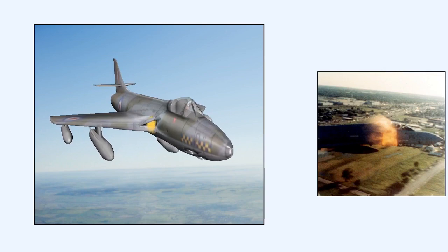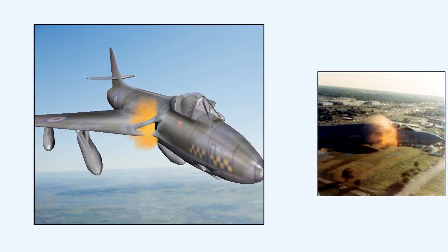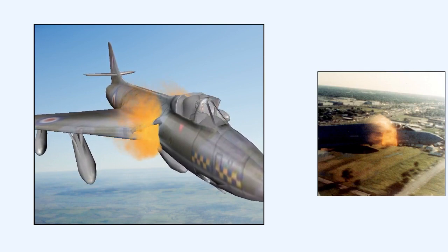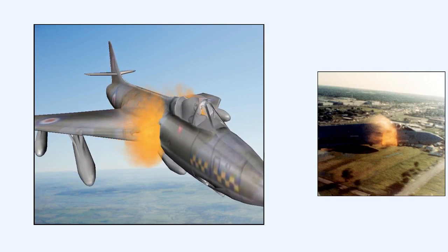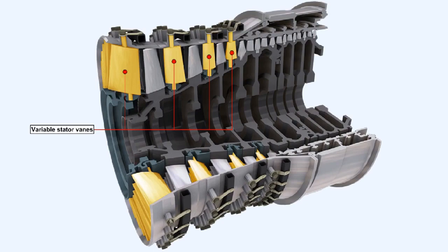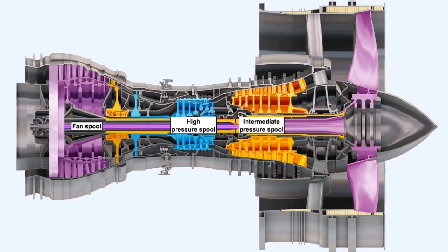Systems that ensure that surge and stall do not happen have to be fitted to the engine. Here are some of those systems: variable inlet guide vanes or VIGVs, variable stator vanes, compressor bleeds, and multi-spool compressors.